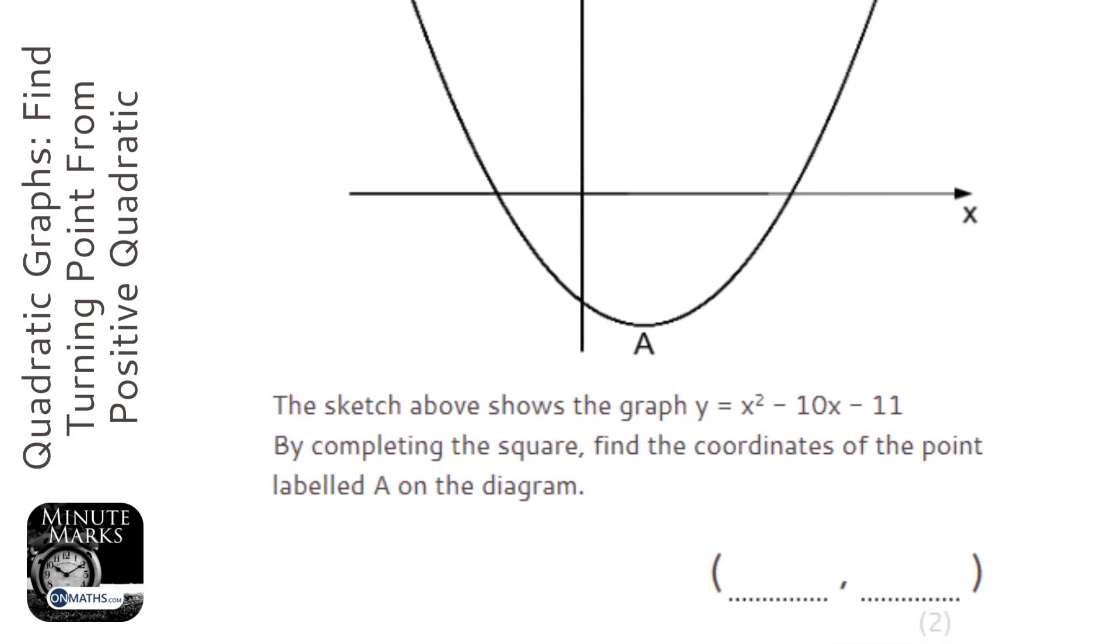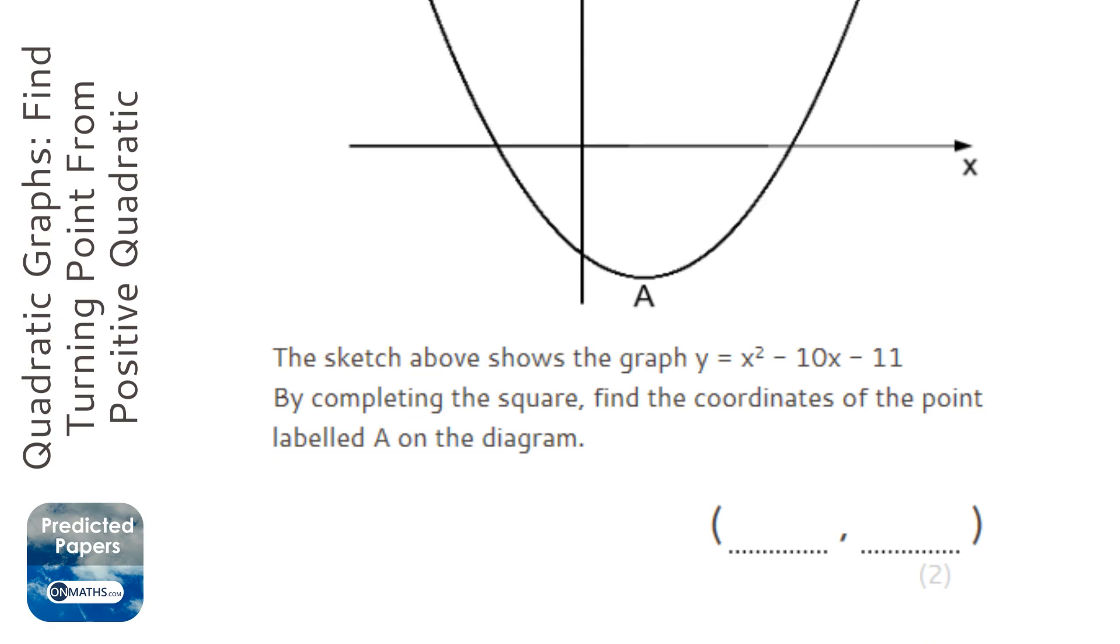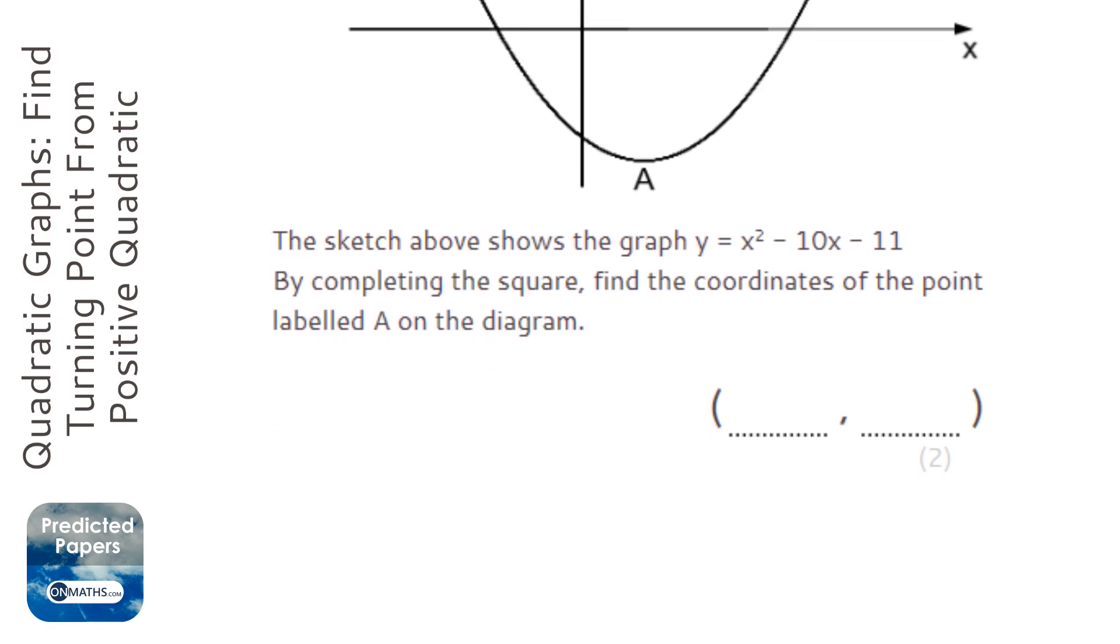In this question, we're told to complete the square to find the coordinates of the minimum turning point of the quadratic. So we're going to start by completing the square.